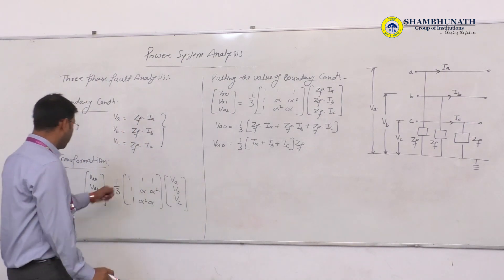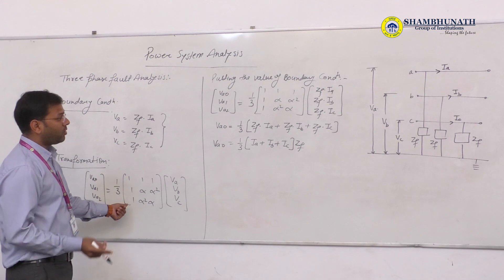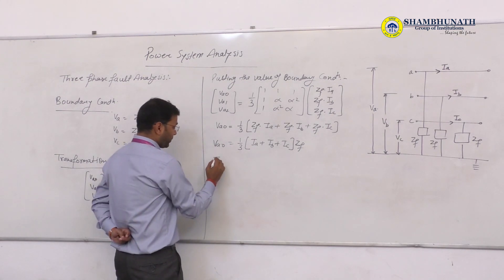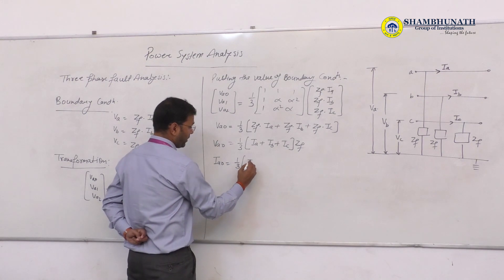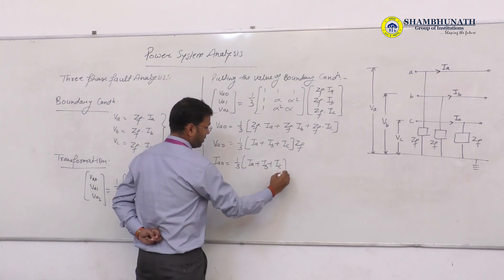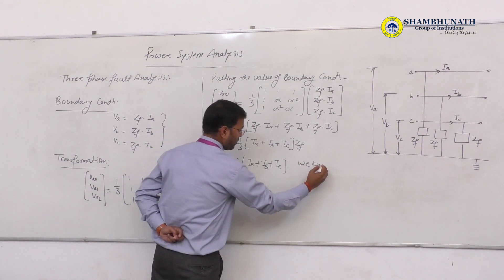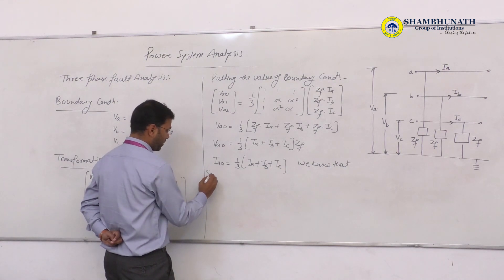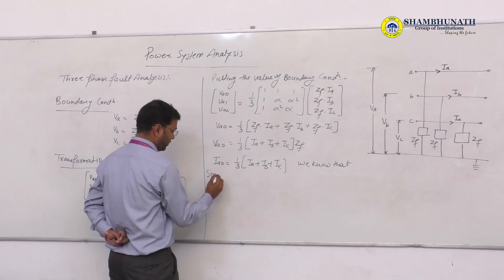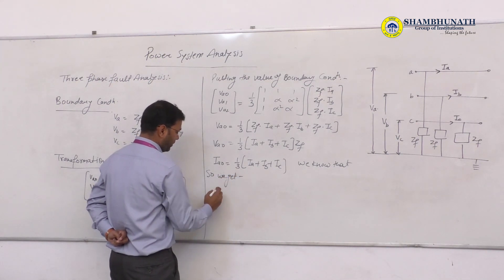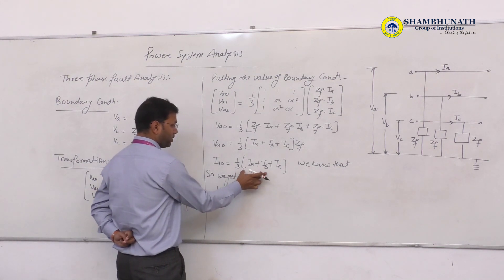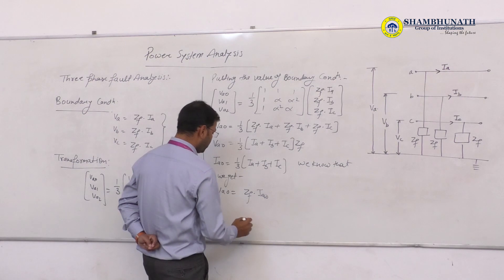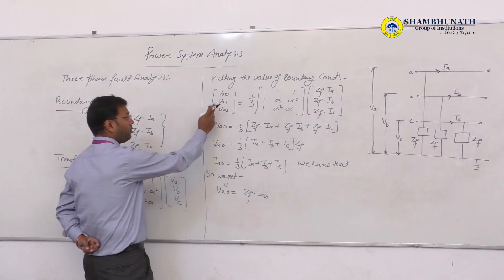As we all know, just like the voltage transformation equation, we can also write the current transformation equation. So here we can also put the value of Ia0 equal to one-third of IA plus IB plus IC.